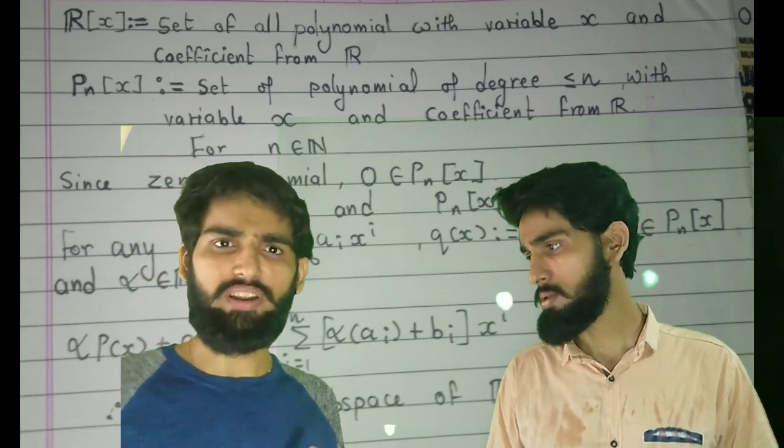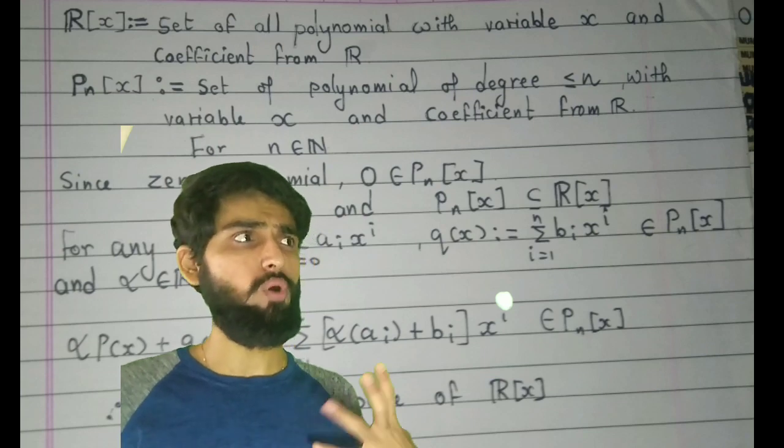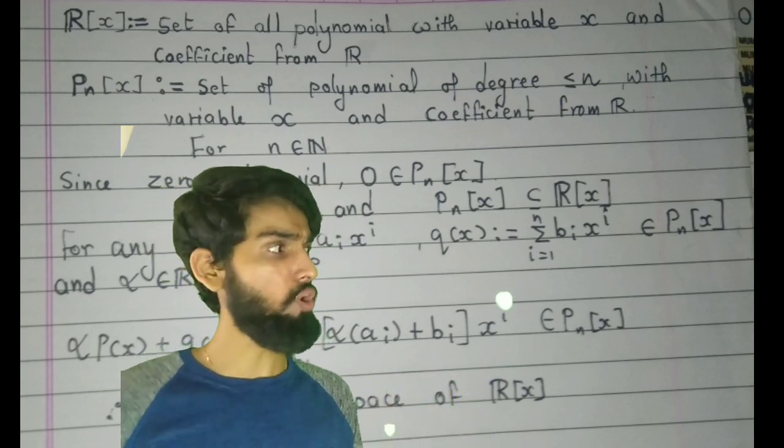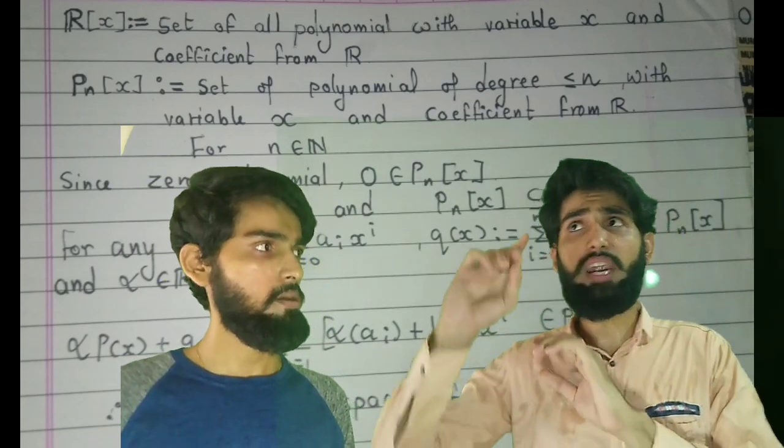Can you tell me why this P_n[x] is defined like this? That means, can I define P_n[x] to be set of all polynomials with degree n only? What will happen there?